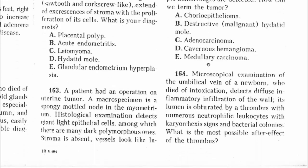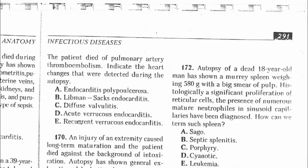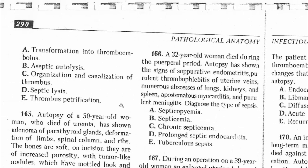Question 164: Microscopic examination of the umbilical vein of a newborn who died of intoxication detected diffuse inflammatory infiltration of the wall; its lumen is obturated by a thrombus with numerous neutrophilic leukocytes with karyorrhexis signs and bacterial colonies. Karyorrhexis means destruction of the nucleus of a dying cell. Given the wound intoxication context, this is due to sepsis. The answer is septic lysis.